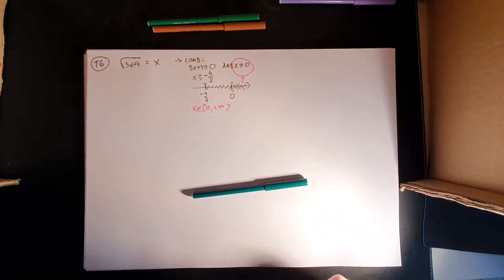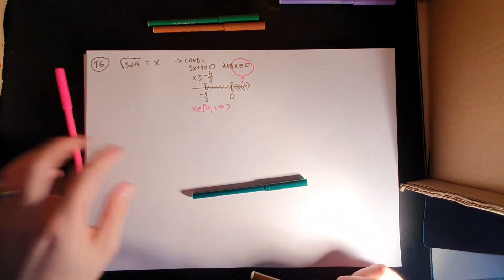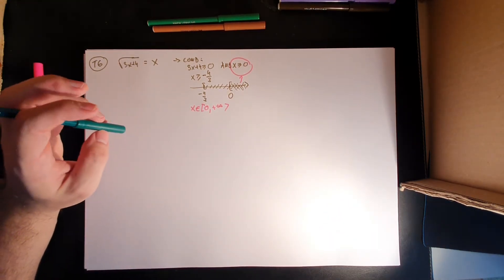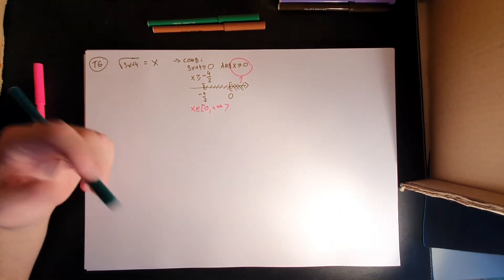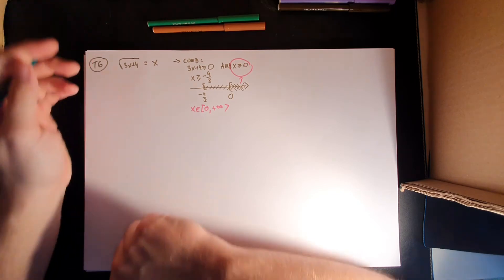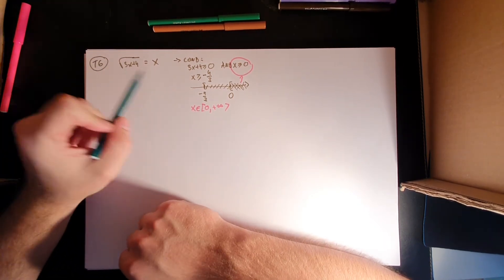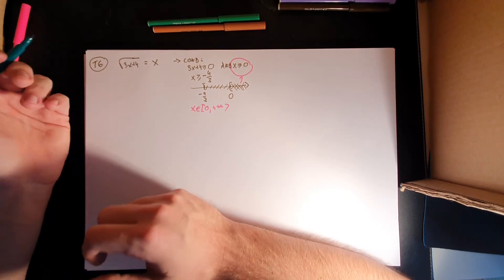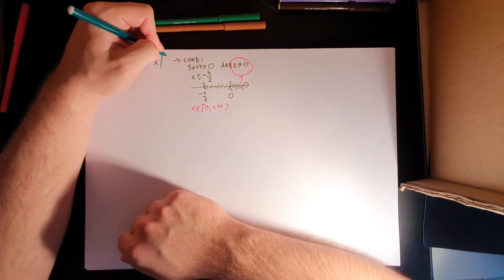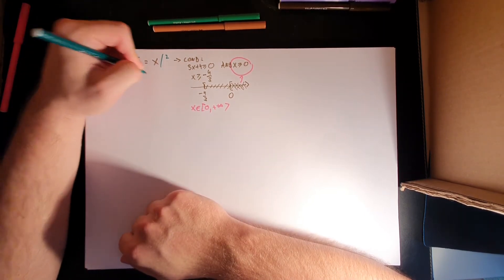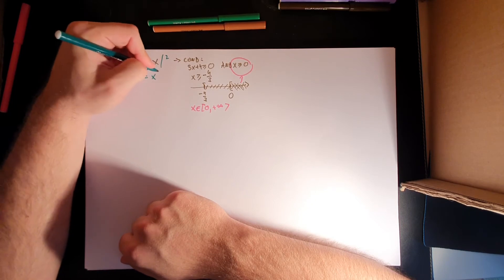Now let's go into the solving part. This is where things get interesting and we apply methods learned previously. First step: can we square it? Yes, we can, because the root is alone on the left side and everything else is on the other side. So squaring gives us 3x plus 4 equals x squared.